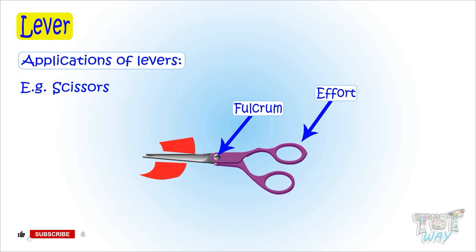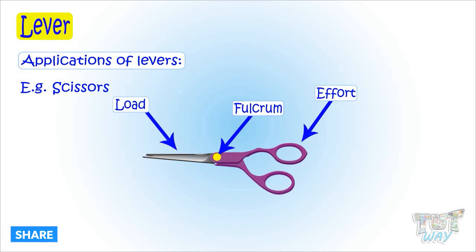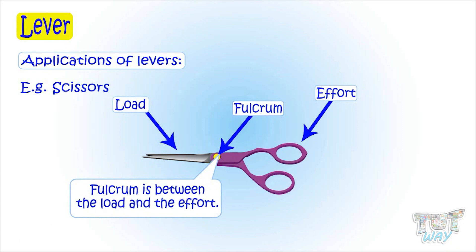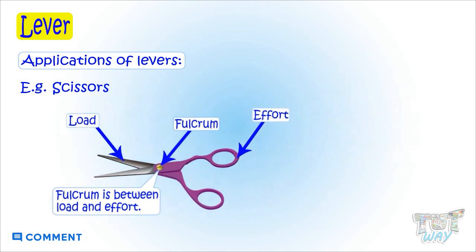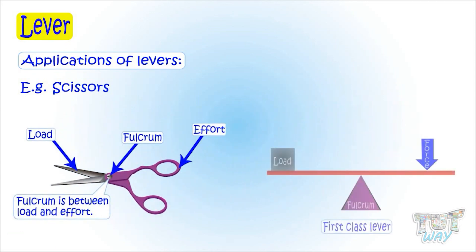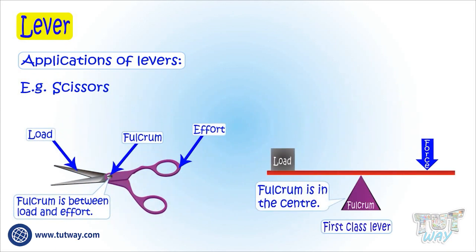This is the load point. Here the fulcrum is between the effort and the load, so this is an example of a first class lever, as the fulcrum is in the center.